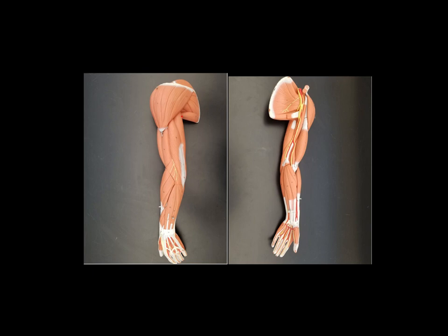On the back of the arm, this is the triceps brachii. So on the front, this is the biceps brachii, and on the back is the triceps brachii.